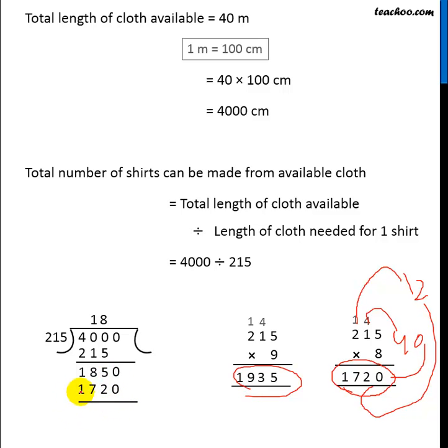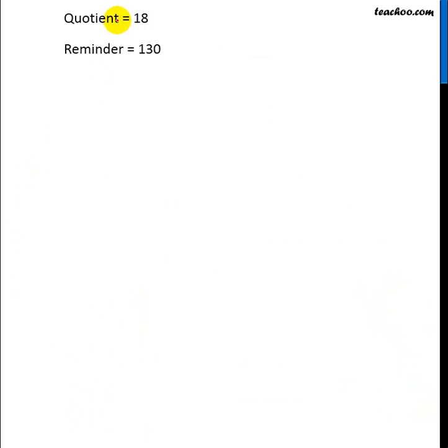Now we subtract both these numbers. 0 minus 0 is 0, 5 minus 2 is 3, 8 minus 7 is 1. So 4000 divided by 215 will come out to 18 and the remainder will be 130. So here 18 is the number of shirts which can be made and 130 is the remaining cloth. Quotient is 18, remainder is 130.